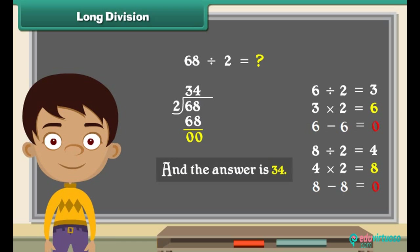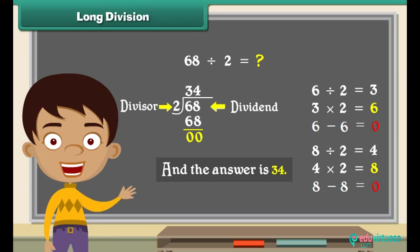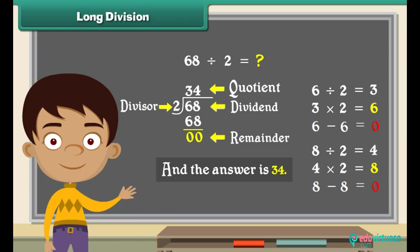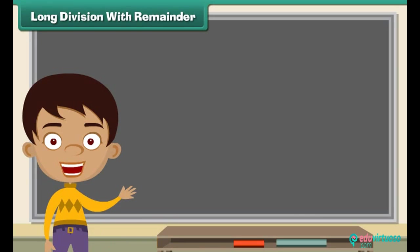Here sixty-eight is the dividend, two is the divisor, thirty-four is the quotient, and the remainder is zero.